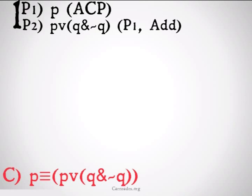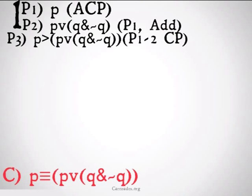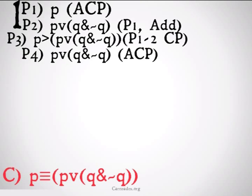So we'll start with P, assumed conditional proof. We'll draw a little line going down because it doesn't take much to get the other half of that. All we need to do is premise one, addition. We'll add on Q and not Q and therefore conclude P implies P or Q and not Q. One, two, conditional proof. Pretty simple.